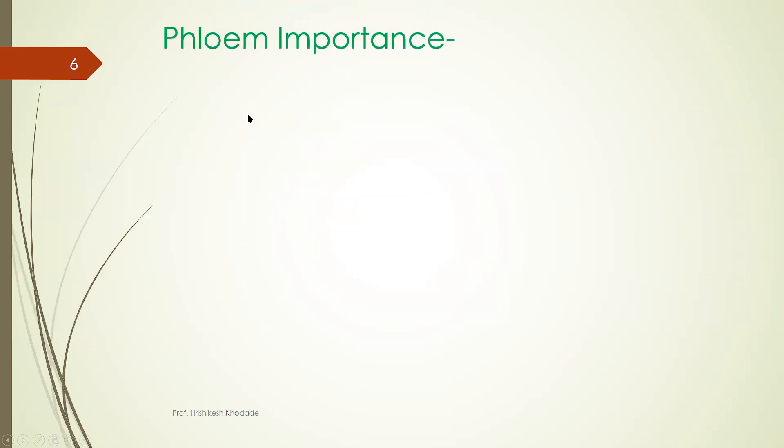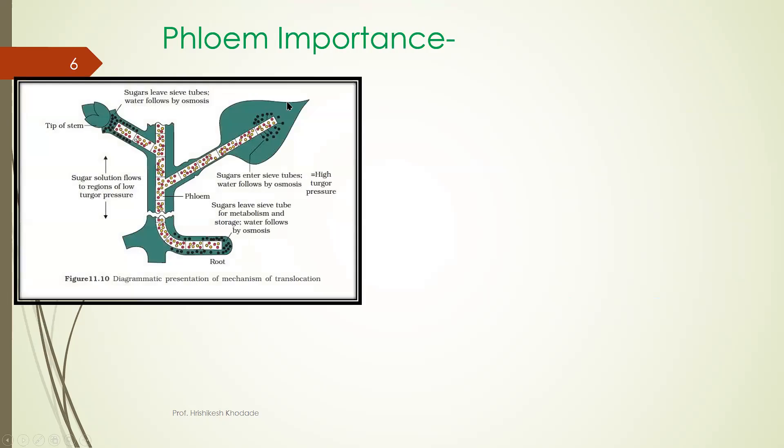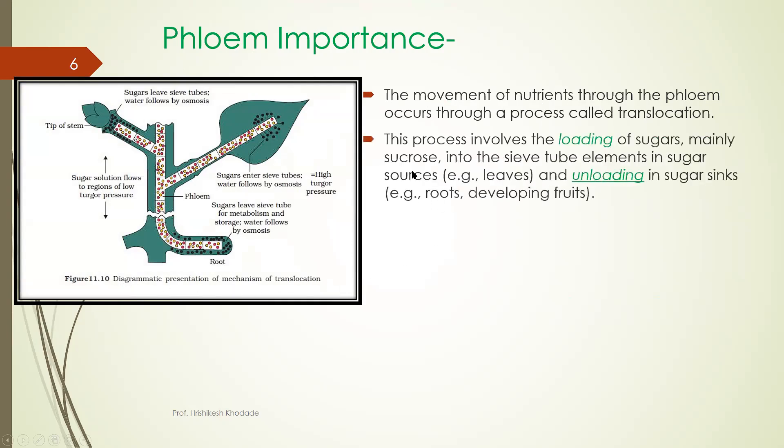But what is importance of this phloem? So you can notice here leaf and root. So whatever food materials are synthesized in this leaf are transported to the root. So this is phloem importance. The movement of nutrient through the phloem occurs through a process called translocation.